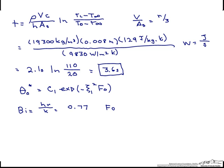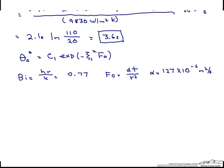Our Fourier number, if you recall, is equal to alpha times t over r squared, where this alpha, the thermal diffusivity of the solid, is 127 times 10 to the minus 6 meters squared per second. So let's solve for our Fourier number.